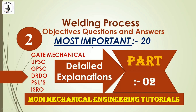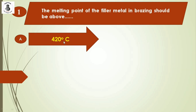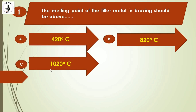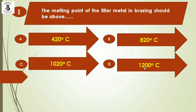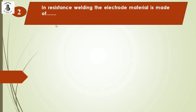Question 1: The melting point of filler metal in brazing should be above — option A: 420°C, option B: 820°C, option C: 1020°C, option D: 1200°C. In brazing, metals are bonded using a filler metal with a melting temperature greater than 450°C but lower than the base metal. So the closest answer from the given options is option A: 420°C.